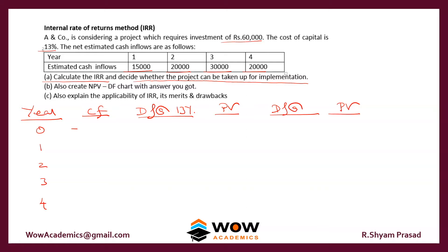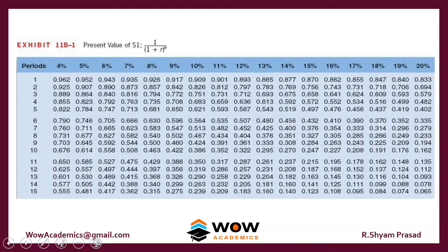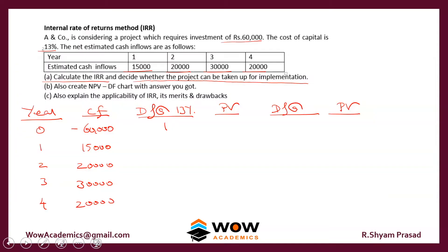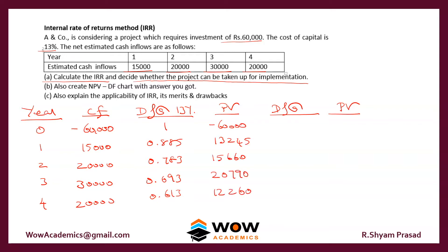The 0th year is always a minus with the cash outflow, so 60,000. The discount factor for the first year is always 1. For 13%, we use the standard discount factor table for a four-year period. We multiply the cash flows by the discount factors and get the NPV, which comes out as a positive number: 1,955.